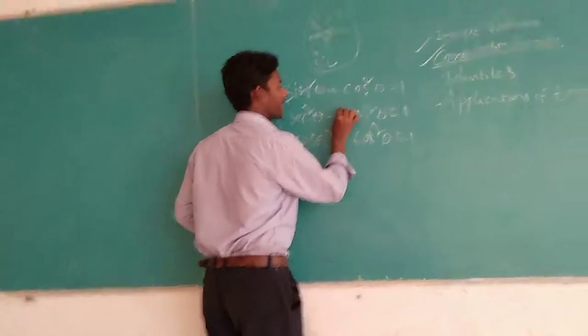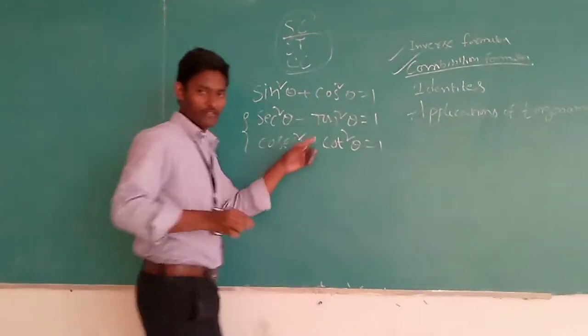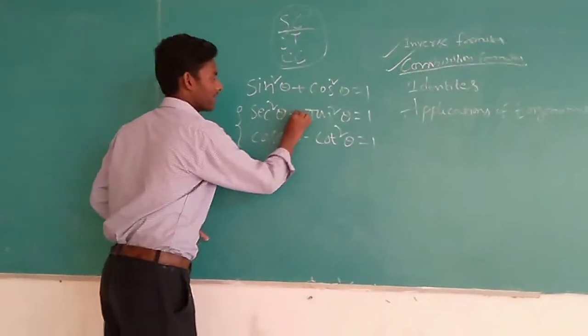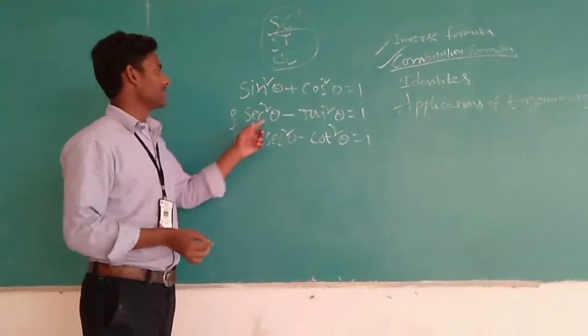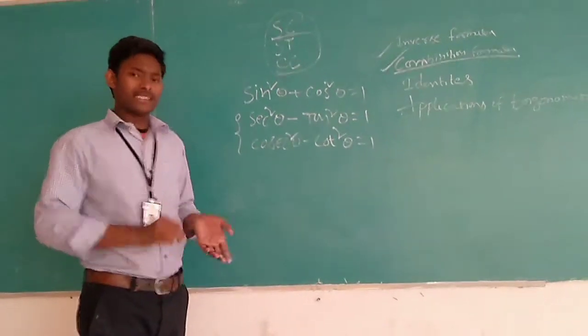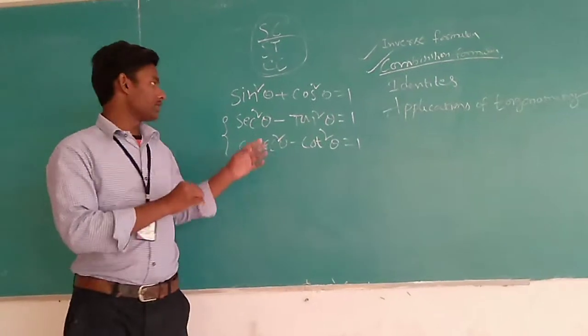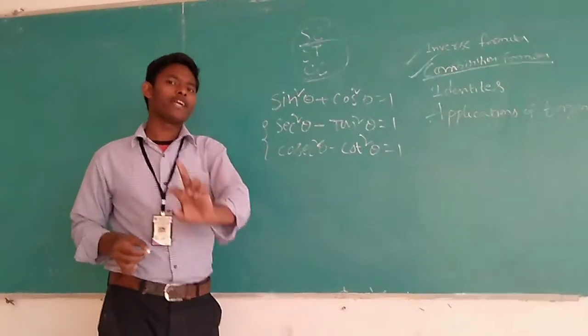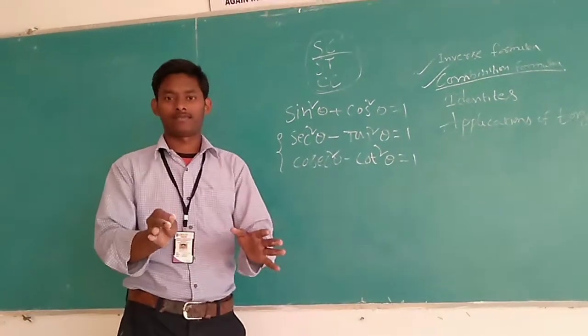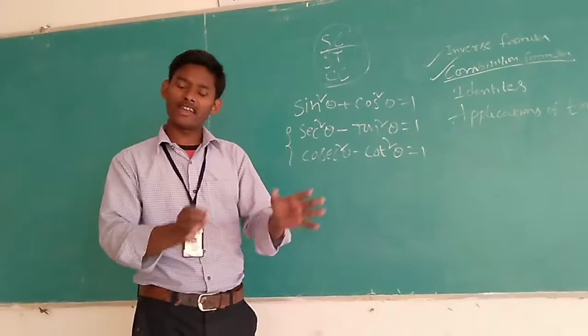Nothing different. Here, tan have a line. Put that line here. That is, secant square theta minus tan square theta. It is easy to remember like this, that only sine square theta plus cos square theta have plus. Remaining two have minus.